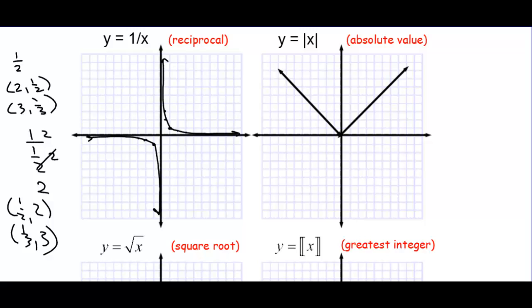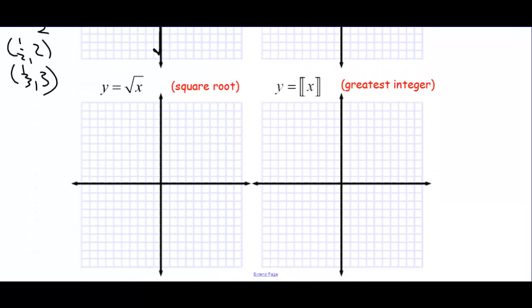Here we already have the absolute value graphed. There is the right branch, and here is the left branch. You get that because if you plug in negative 1, you get positive 1; plug in negative 2, you get positive 2. And the same thing happens on the positive side: plug in 1, you get 1; plug in 2, you get 2. And we get this V-formation, the V-graph.